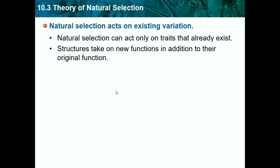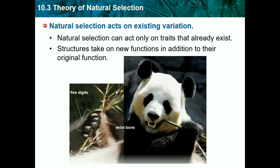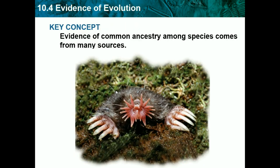Structures can take on new functions in addition to their original function. For example, pandas have five fingers, and while humans and primates are typically the ones with thumbs, pandas adapted and use their wrist bone as a thumb. That's an adaptation they have.